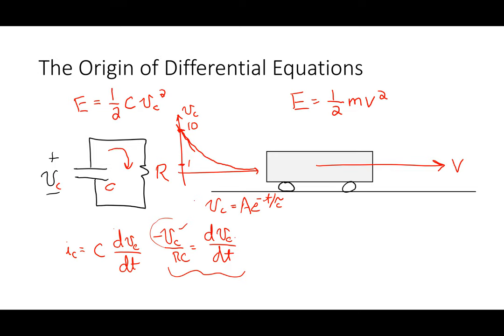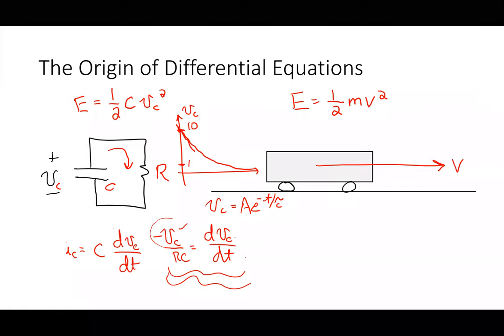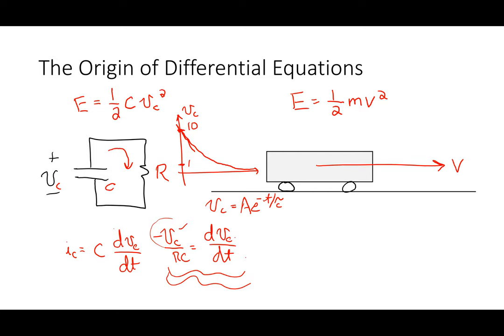So V sub C when it's 10 volts, the rate of change is going to be higher than when it's down here at one volt. That kind of behavior gives rise to a voltage that is going to be of some exponential form, and tau is how fast that guy drops.